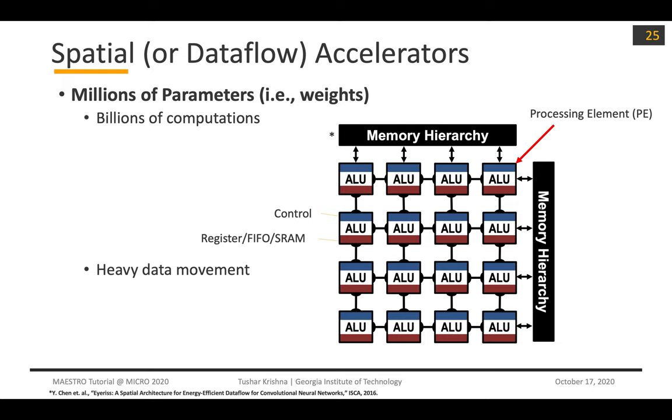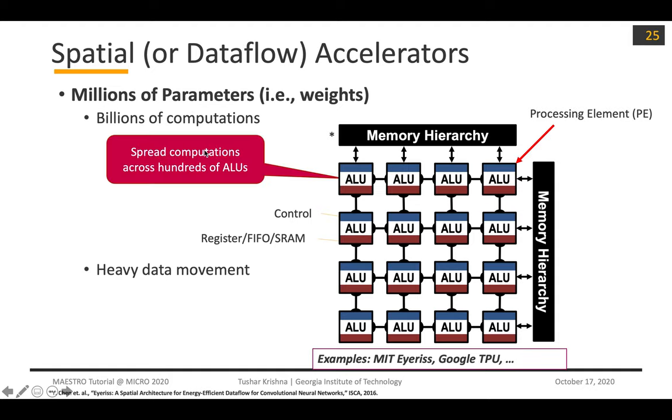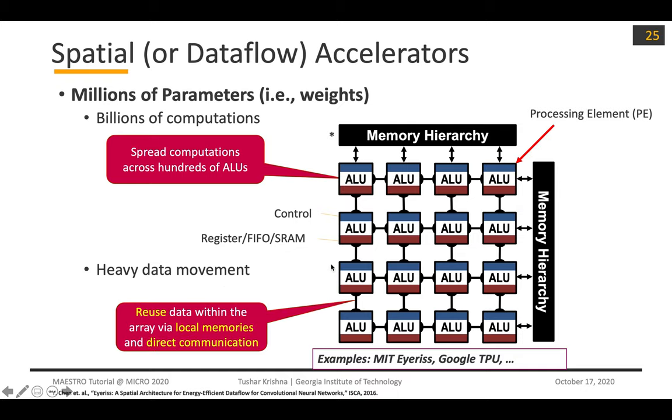This has led to a Cambrian explosion of accelerators that are often called spatial or data flow style accelerators. From a hundred-foot view, all accelerators look like this: they have a bunch of ALUs that are tightly coupled, and they are connected with some custom on-chip network and a memory hierarchy. Since you have billions of computations, the idea is you want to spread these computations across hundreds of ALUs. To avoid heavy data movement, you want to reuse the data within the array via local memories and direct communication.